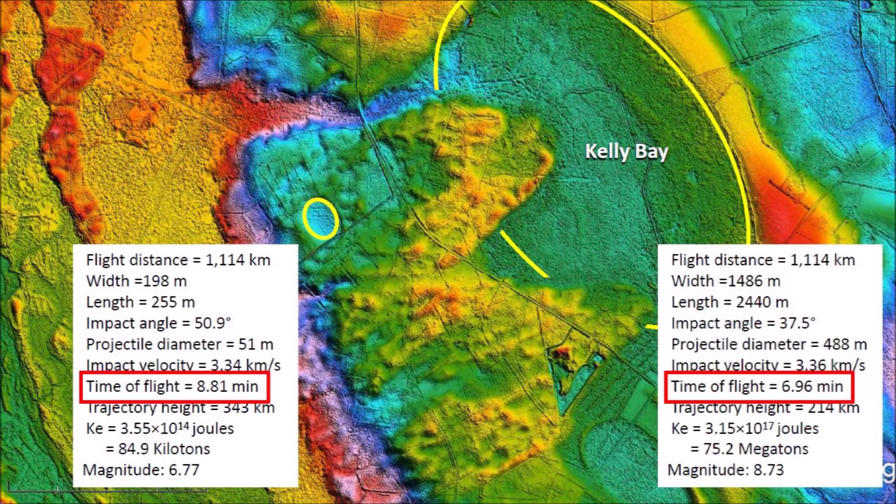Notice the difference of 1.85 minutes in the time of flight. The large bay was created 6.96 minutes after the extraterrestrial impact on the Laurentide Ice Sheet, and the small bay was created 1.85 minutes later — that is, 1 minute and 51 seconds.